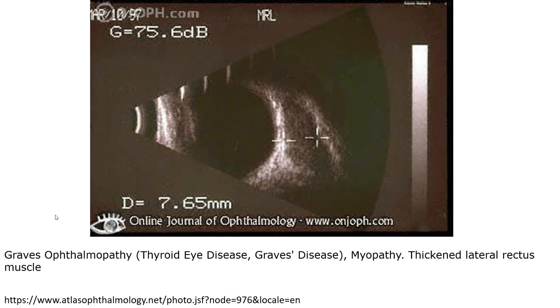This is what we call Graves ophthalmopathy, where the ultrasound shows a thickened lateral rectus muscle.